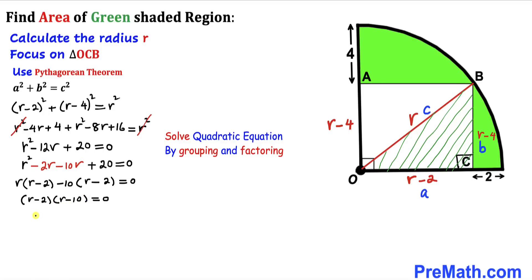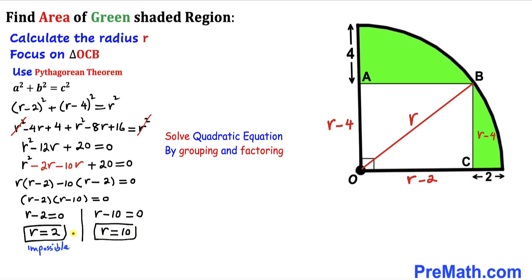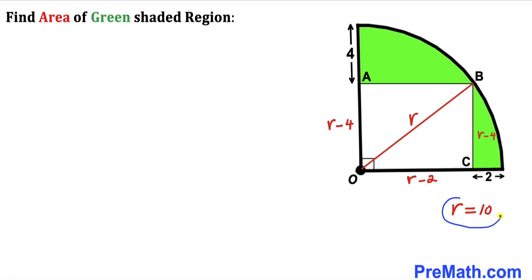Setting each factor equal to zero: R minus 2 equals 0 gives R equals 2 units, and R minus 10 equals 0 gives R equals 10 units. The value R equals 2 is not geometrically possible as seen in the diagram, so we reject it and accept R equals 10. Therefore our radius R equals 10. This means R minus 2 equals 10 minus 2 equals 8 units, and R minus 4 equals 10 minus 4 equals 6 units.